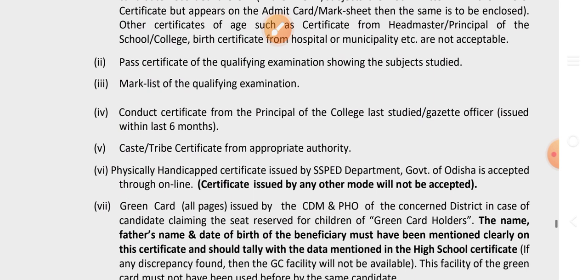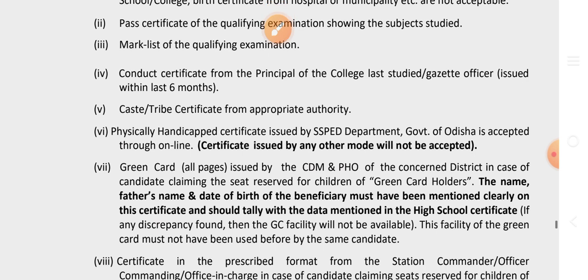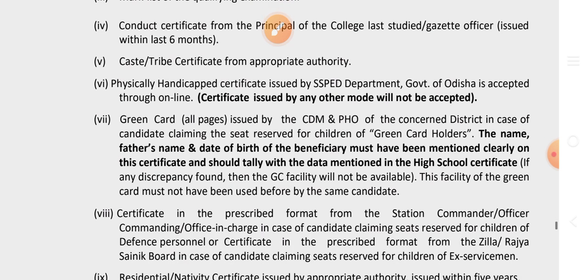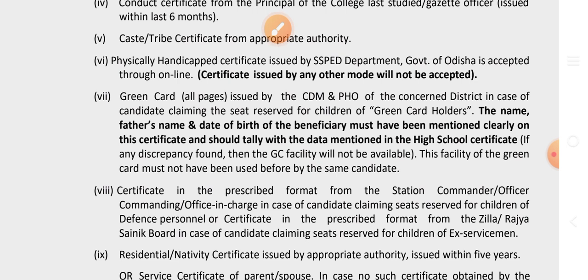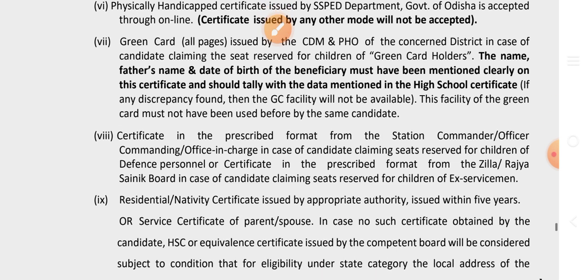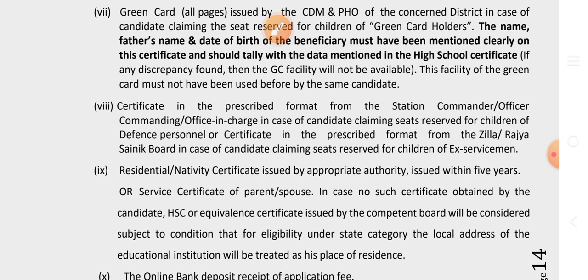Caste/tribe certificate from appropriate authority. Physical handicapped certificate issued by the SSPD department, Government of Odisha, accepted only through online mode — certificates issued by any other mode will not be accepted. Green card issued by CDM and PHO of the concerned district for candidates claiming seats reserved for green card holders; father's name and date of birth must match the high school certificate. Defence certificate in prescribed format from the station commander; ex-servicemen certificate from Jilla Rajya Sainik Board. Residency certificate issued by appropriate authority, or service certificate of parent or spouse.